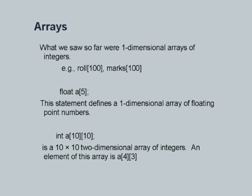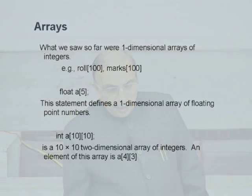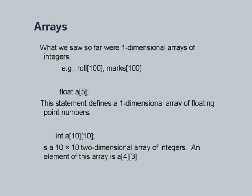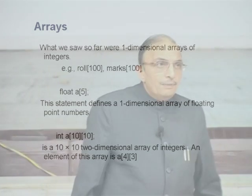So far we have seen one-dimensional arrays of integers — we had roll[100], marks[100] and so on. Instead of defining an array as an integer, I could define it as a float or double, in which case each element can hold a float or double value. I can also define two-dimensional arrays by merely adding one more dimension after the first square brackets. For example, int a[10][10] represents a two-dimensional array which has 10 rows and 10 columns. All elements must be exactly of the identical type which is declared.